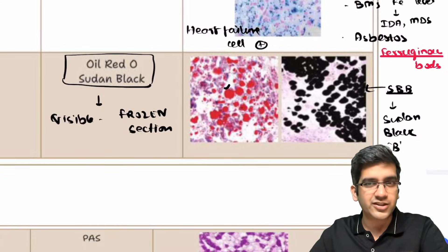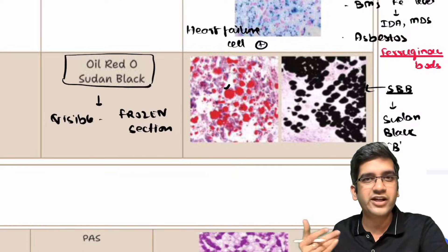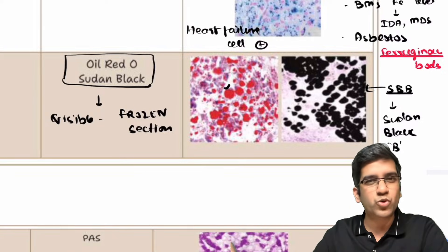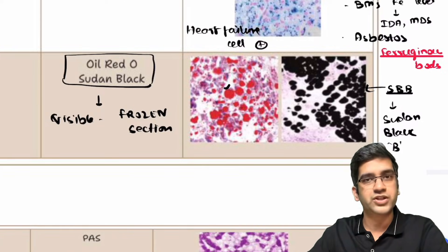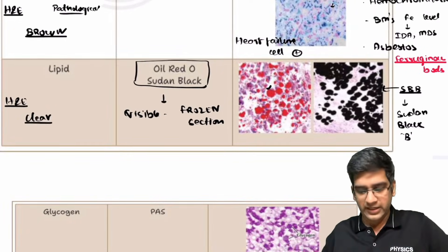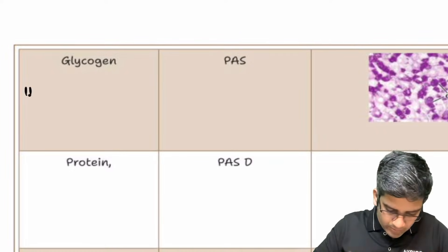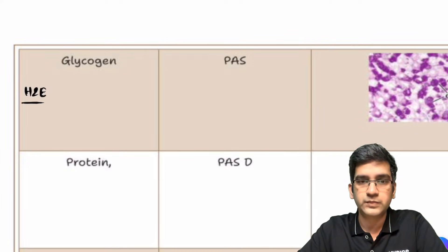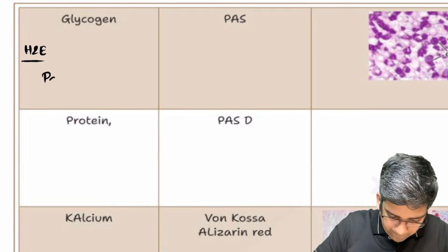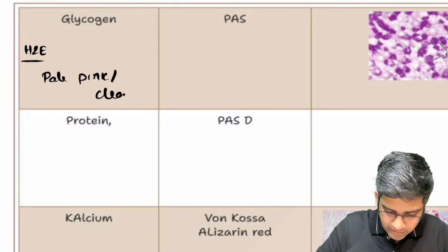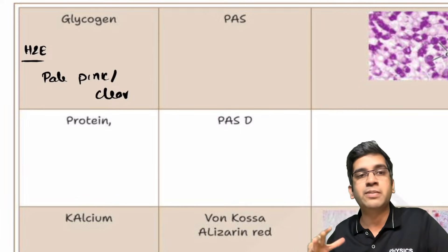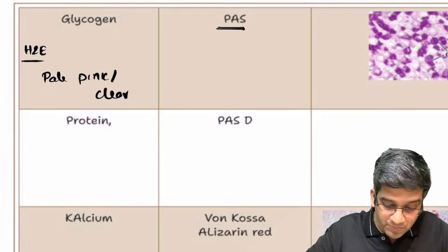The use case for fat stains is actually minimal. Although fatty liver exists, you can identify it from clinical history correlating with microscopy without a fat stain. For postgraduate purposes there are a few diseases where you need to demonstrate fat in a frozen section. Next is glycogen. In H&E, glycogen can be pale pink in color or clear depending on the amount — if slightly present it's pale pink; if in excess it becomes clear.